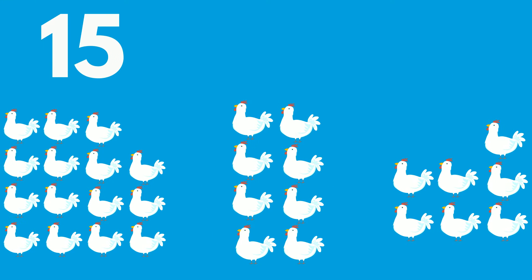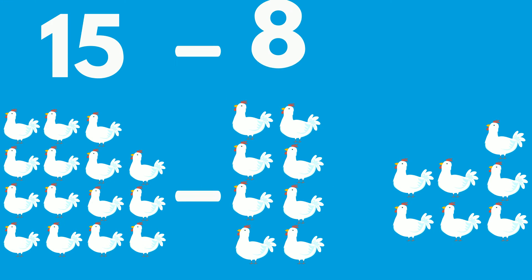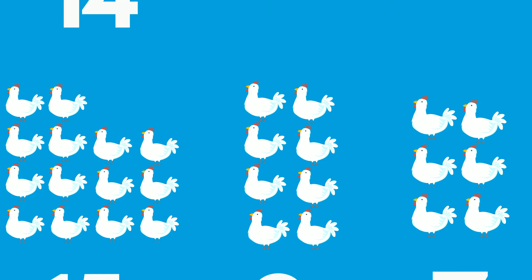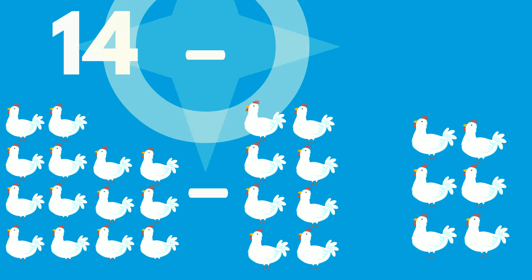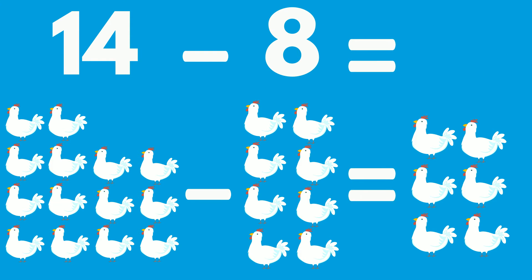15 chickens minus 8 chickens equals 7 chickens. 14 chickens minus 8 chickens equals 6 chickens.